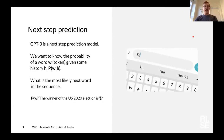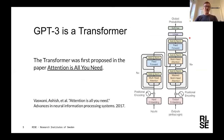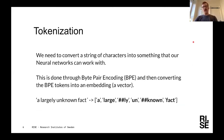GPT-3 is a transformer, as introduced in the 2017 paper 'Attention Is All You Need.' Before getting into the transformer itself, Ariel starts with tokenization. Given a sequence of characters — text — we need to convert them into something the transformer can work with. In GPT-3 they use byte-pair encoding, a technique to segment the text into a fixed vocabulary.